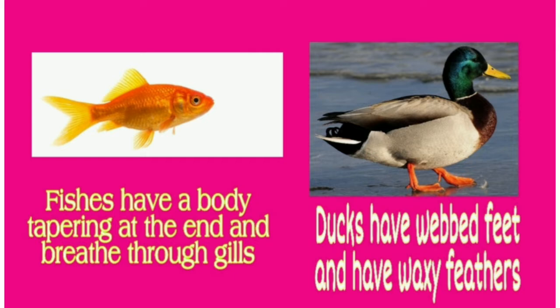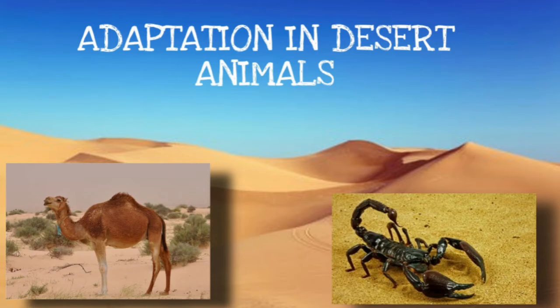Now, adaptation in desert animals. Deserts are characterized by very little water. Desert animals have thick skin so that there is very less loss of water from the body. Their legs are long with flat and cushioned soles. Their nose is protected by folds of skin and their eyelashes are also long and thick so that sand particles do not enter the nose and eyes. Rats, snakes, spiders, and lizards in the desert live in deep burrows during the daytime and are active only at night.